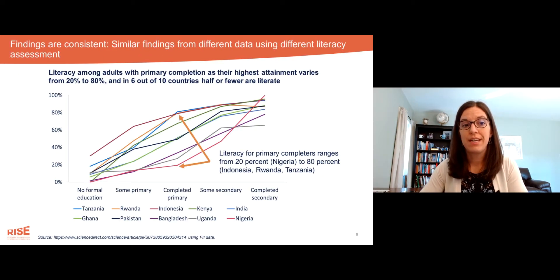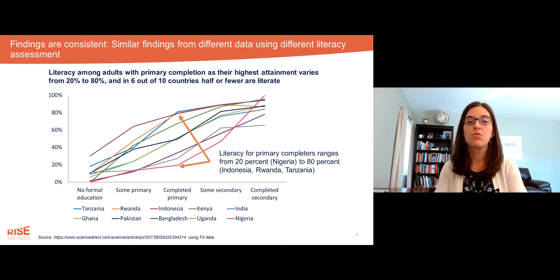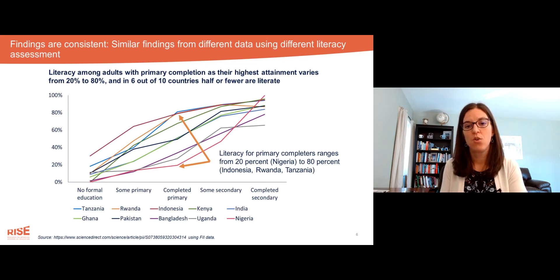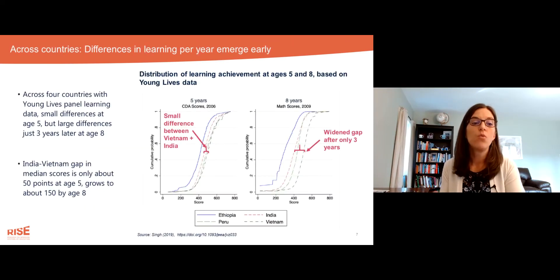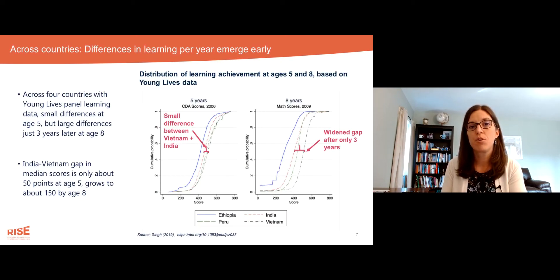We also find that these findings are consistent — we have similar findings from different data using a completely different literacy assessment. These learning trajectories come from the financial inclusion insight surveys, which were household-based surveys including a simple literacy test administered to adult respondents. Here, we see similarly wide variation in learning outcomes, and differences in learning per year emerge early across countries.